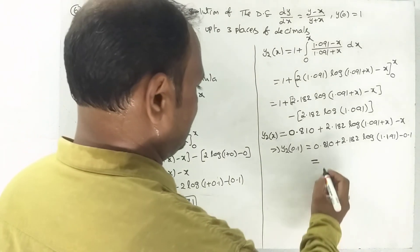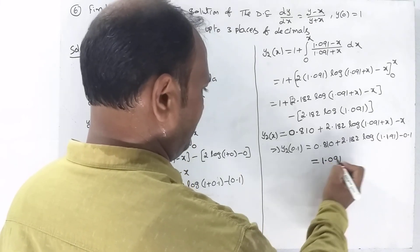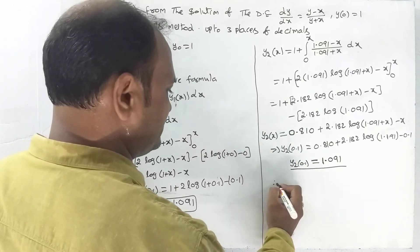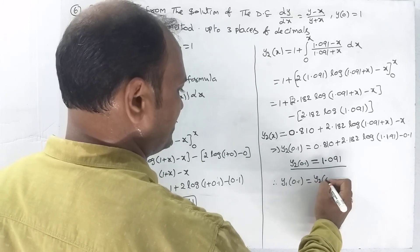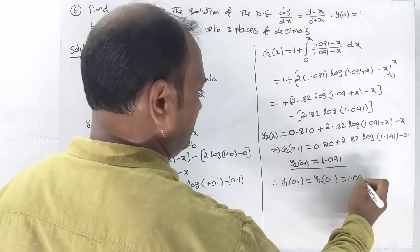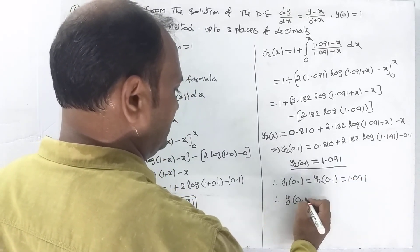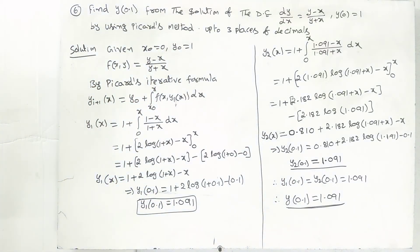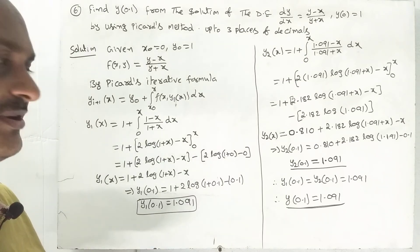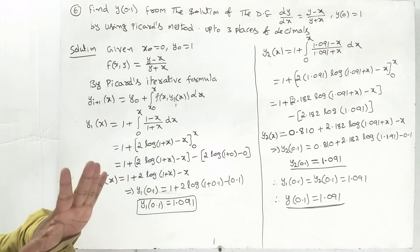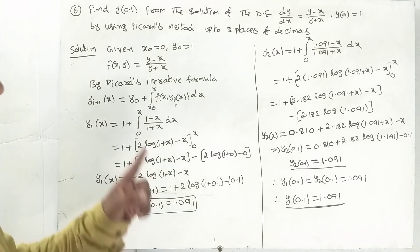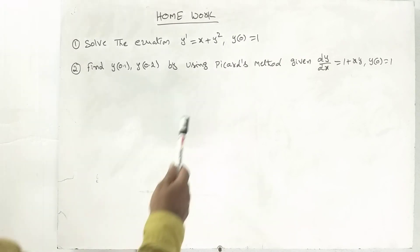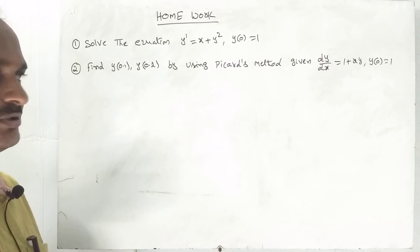Calculating the value: y₂ of 0.1 equals 1.091. Since y₁ of 0.1 and y₂ of 0.1 are both 1.091, the two consecutive approximations are equal. Therefore y of 0.1 equals 1.091. So the answer is y(0.1) = 1.091.